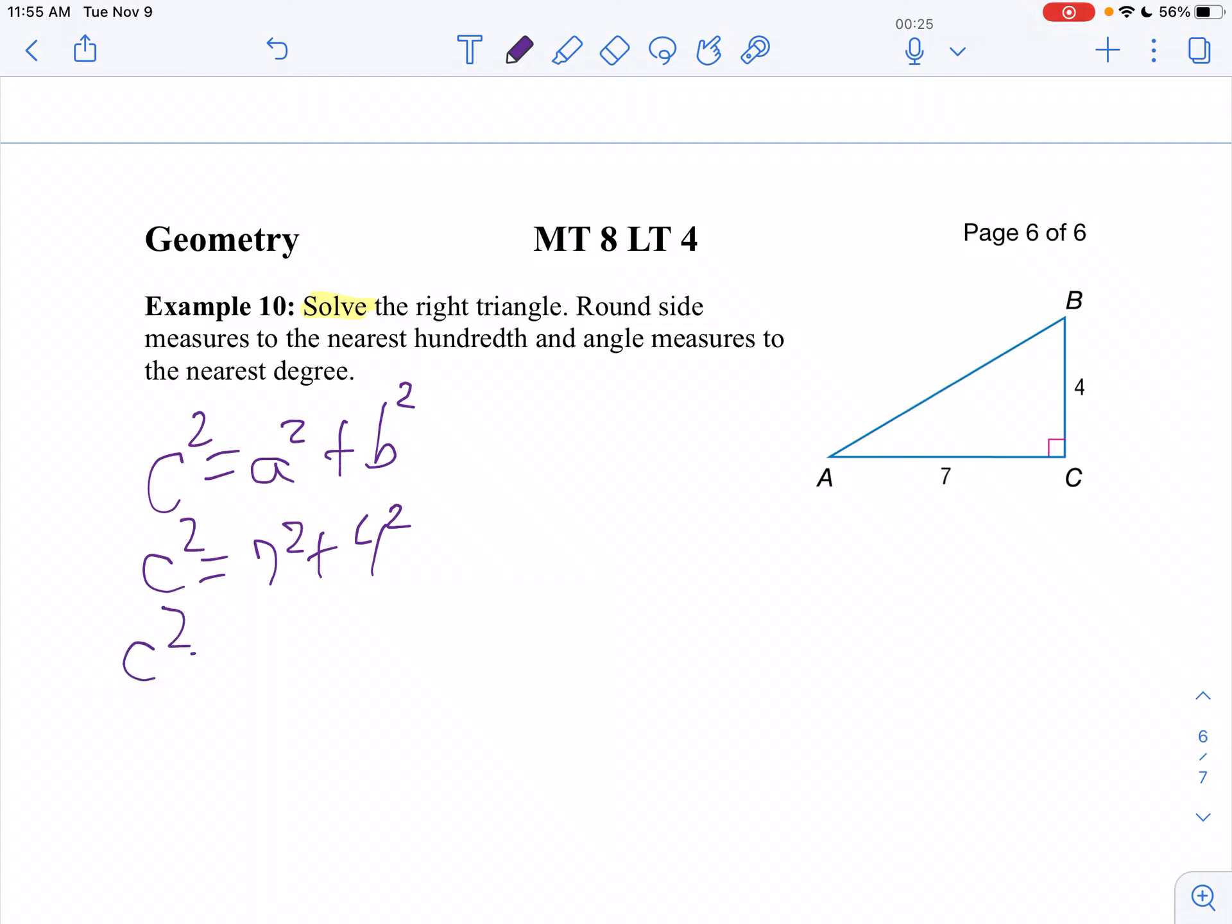So C squared is 49 plus 16. So C squared then is 65, because 49 plus 6 would be 55 plus another 10 is 65. In other words, the exact answer is C is the square root of 65.